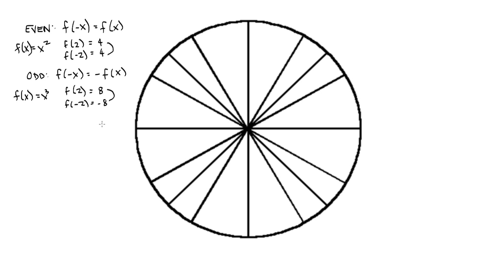So we're going to use that information and talk about the trig functions and which ones are odd and which ones are even. I think the easiest thing to do is to use pi over 4. Our coordinates are, as you should know, radical 2 over 2, radical 2 over 2. So we can work out our sine, cosine, and so on. My sine is radical 2 over 2. My cosine is radical 2 over 2. My tangent, y over x, if I divide my y by my x, I get 1.